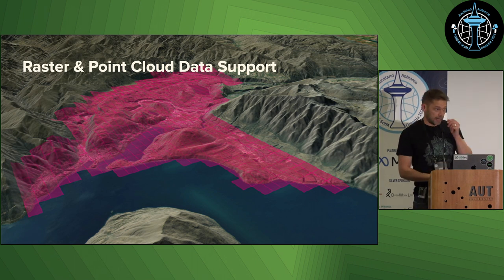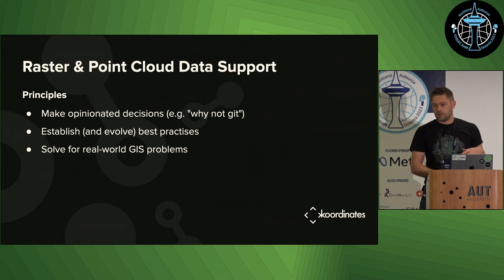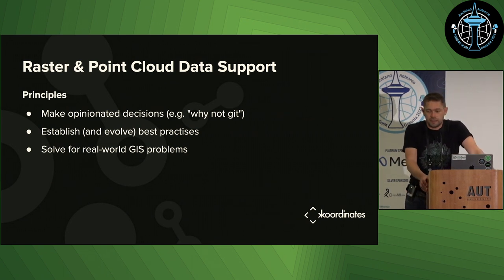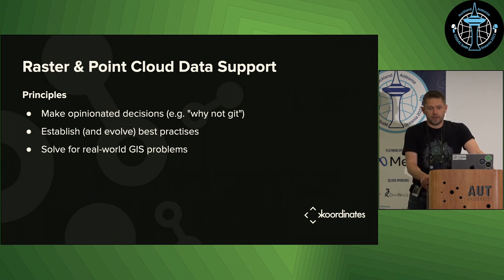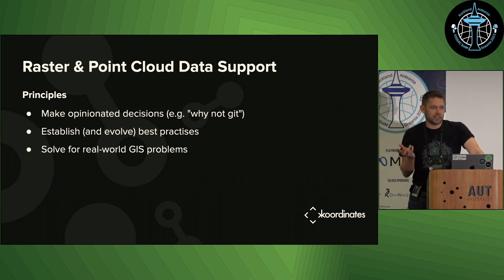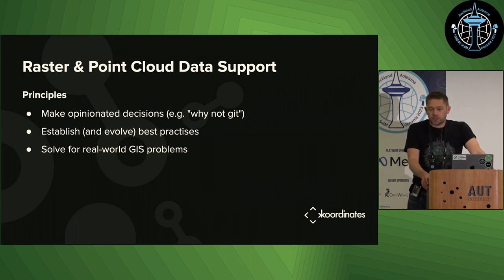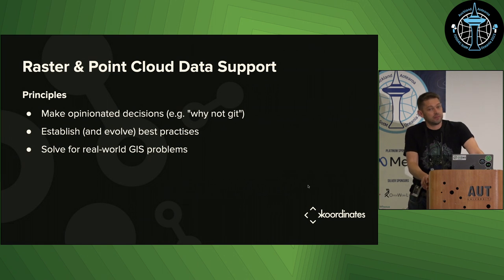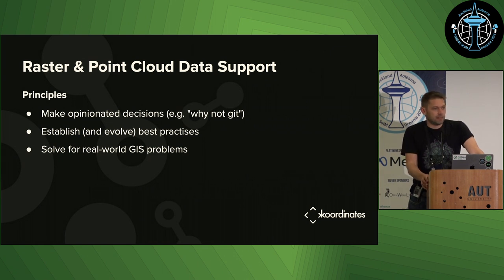Raster and point cloud data support is our new thing. Some principles we're working with here involve making opinionated decisions. We're lucky to be experts in software engineering and know more about GIS than your average software developer — we understand why most GIS people find GeoJSON limiting as a working format, whereas many web developers treat that as GIS. We're also trying to establish and evolve best practices in an environment where we don't know what those might ultimately look like, so we're making some guesses and need to evolve them over time. We're solving real-world problems.